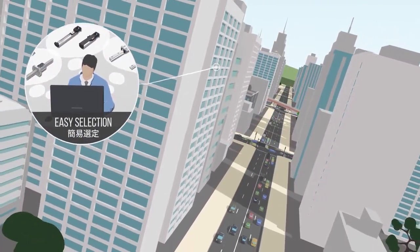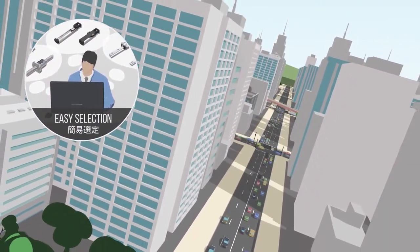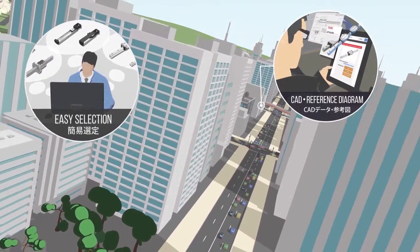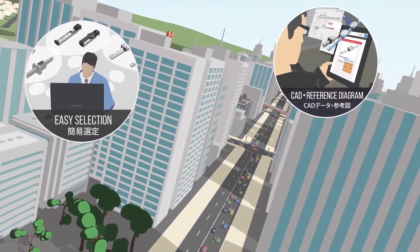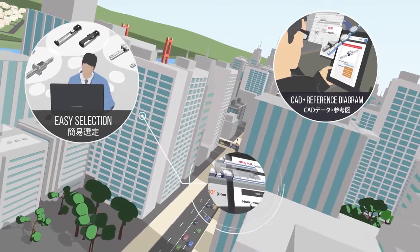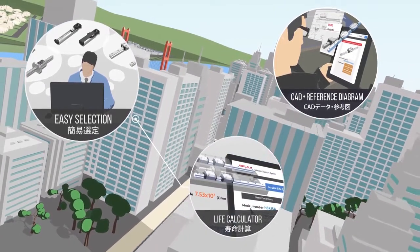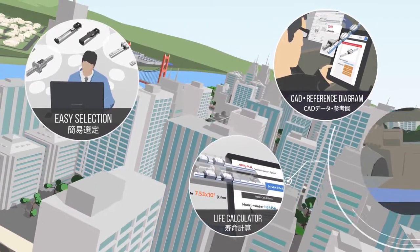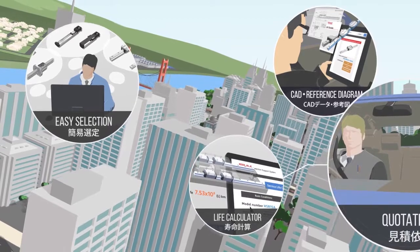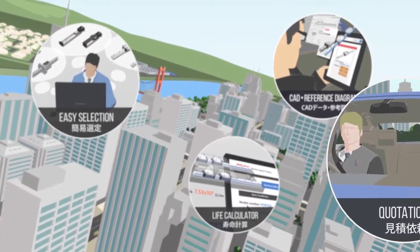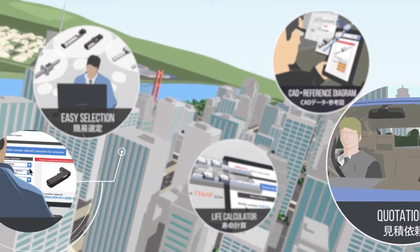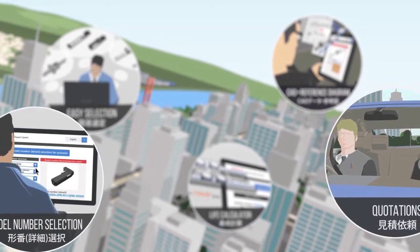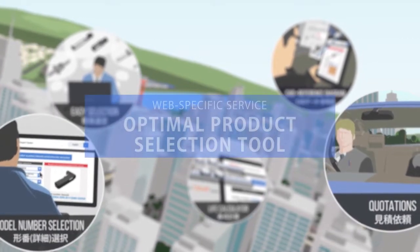There are lots of model numbers and you don't know which one to pick. You want to get product CAD data and Blueprint SysApp. You want to know the service life of the selected product. You want to know quotations quickly. Whether outside or at the office, THK's web service supports you on the ground level.